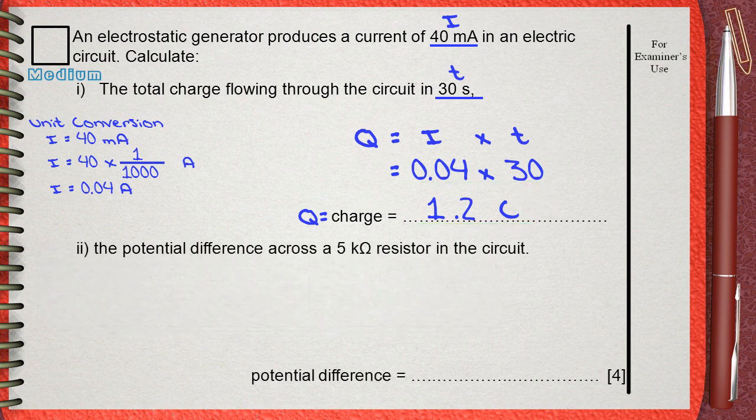Question number 2, double I. Now he's asking for the potential difference across a 5 kOhm resistor in the circuit. This is also a medium question.